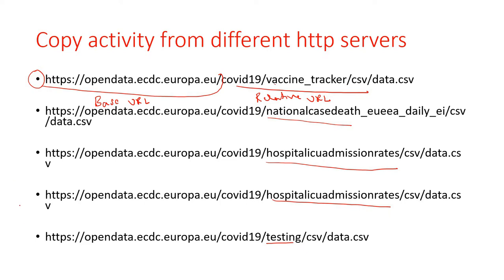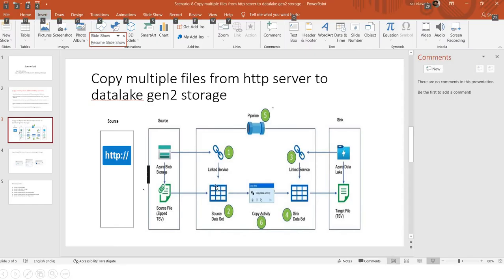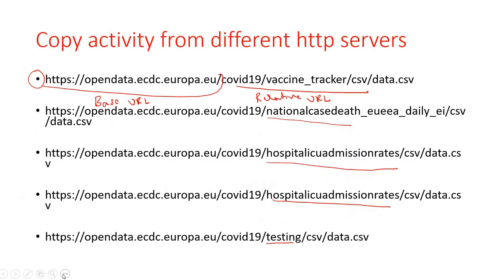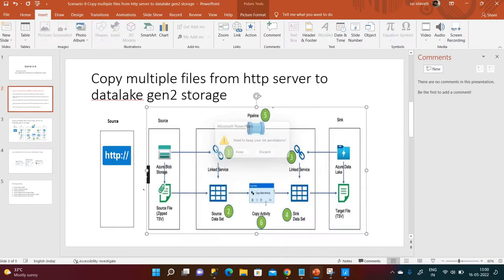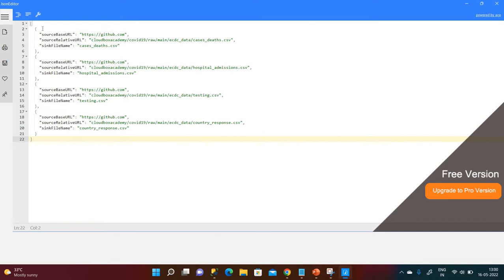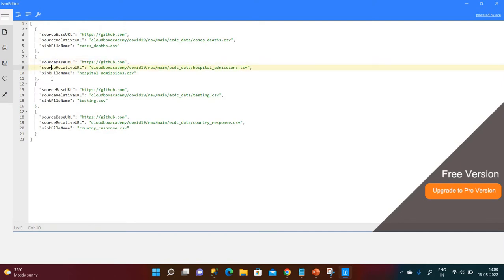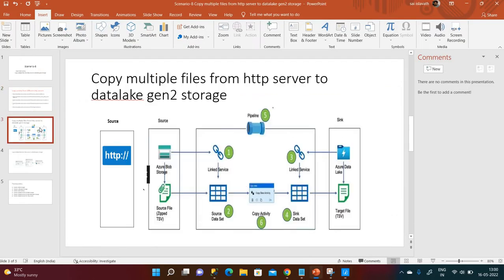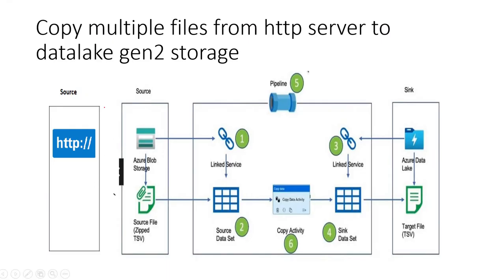Since doing this one by one is time consuming, what I am doing is writing all these website URLs into a file and reading from there. This is my JSON file. In the JSON file I have written the source URL, relative URL, and file name — the same way for each HTTP server file. I have four files total written into a dot JSON file.